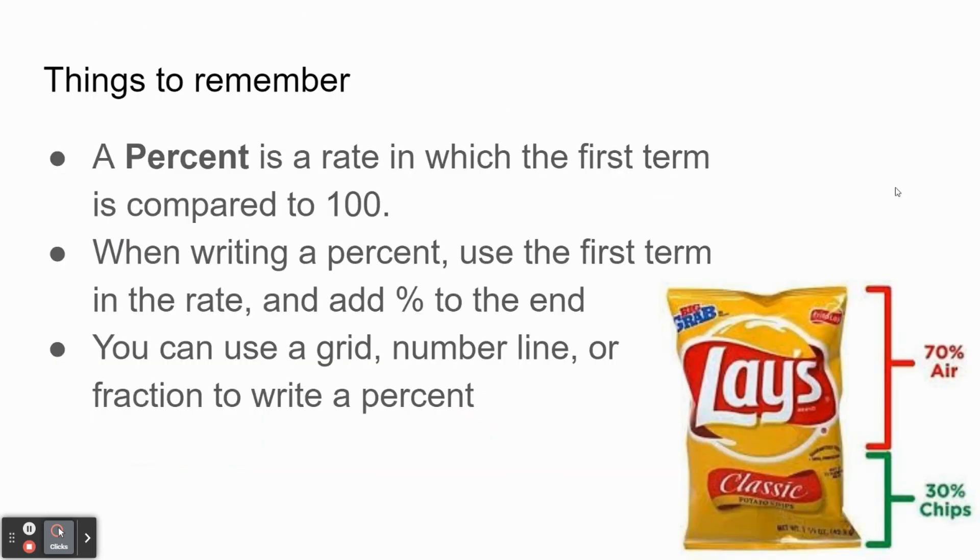Things to remember from this video. First off is our definition: a percent is a rate in which the first term is compared to 100. That is the key idea from this video. Write that down again if you didn't write it down earlier because you absolutely need to have that written down. So when you're writing a percent, you're going to use the first term in the rate and then essentially add a percent to the end. This is specifically referring to if you already have something in a fraction out of 100, then you just need to use that term so you'd have 35%. That's what that means in case that's not clear.